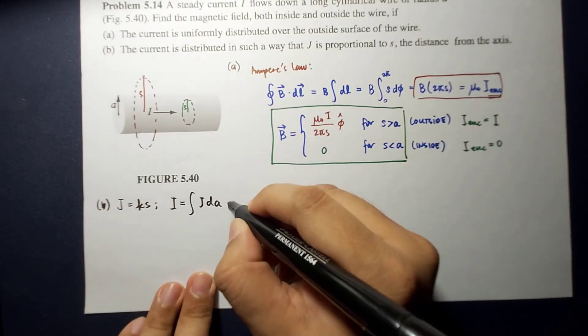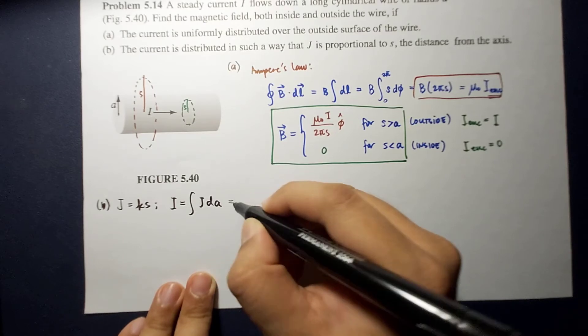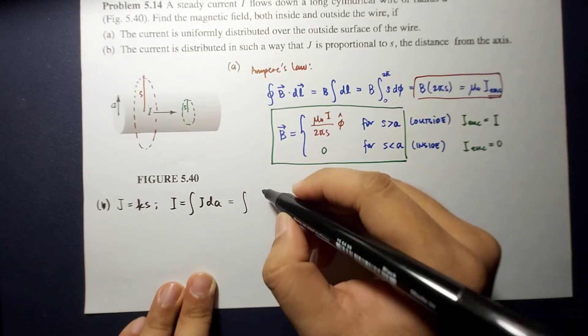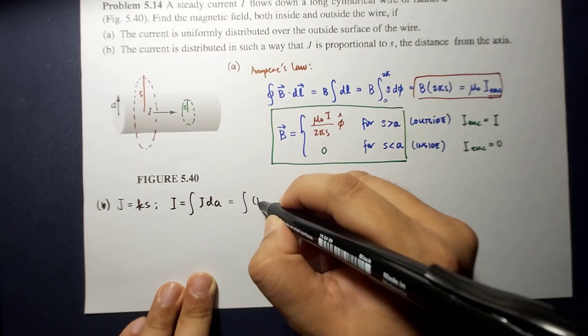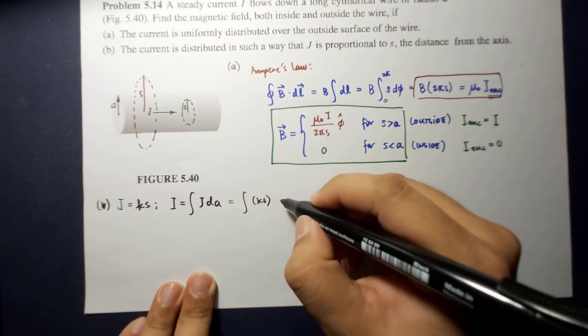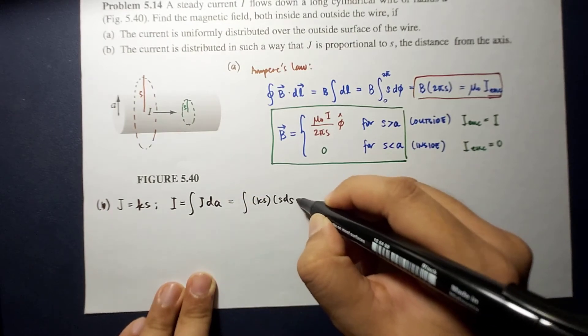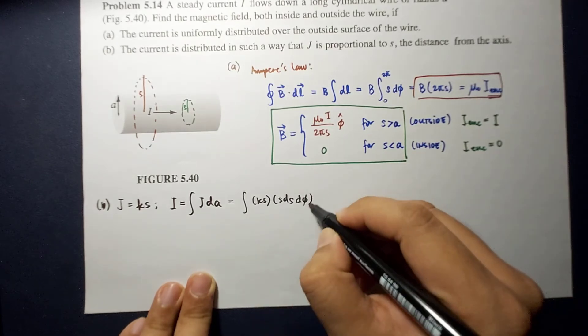So, this is now equal to what? This is equal to integral of K S times dA would be S dS dV. So, this is a double integral.